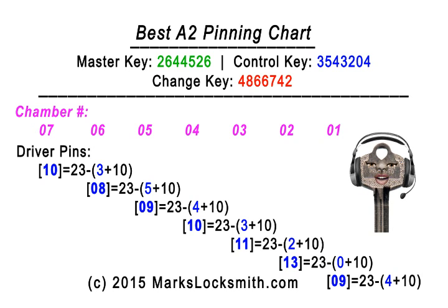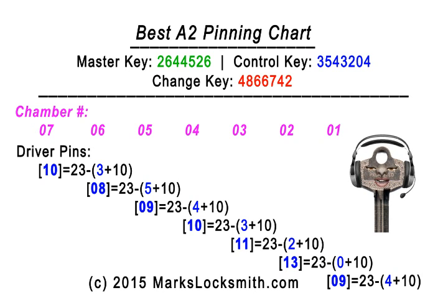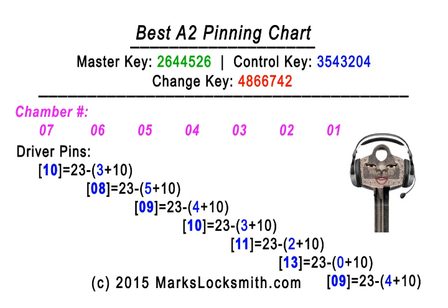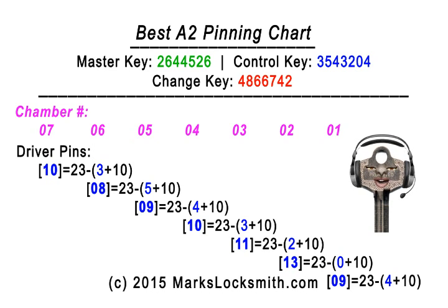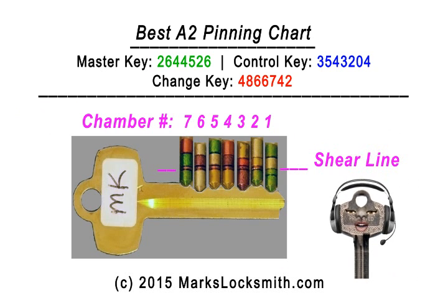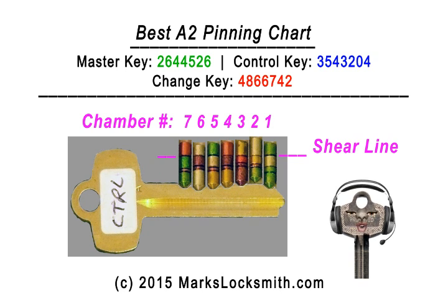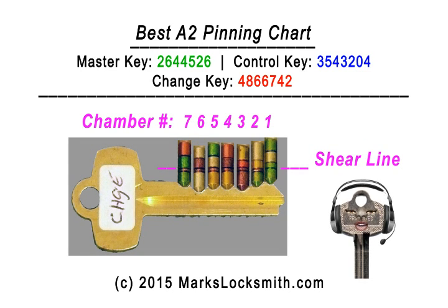Let's find our driver pins using the control key information. Chamber seven: twenty-three minus three from the control key plus ten equals ten. Chamber six: twenty-three minus five from the control key plus ten gives us eight. Chamber five: twenty-three minus four plus ten gives us nine. Chamber four: twenty-three minus three plus ten gives us ten. Same for chambers three, two, and one. Those are our driver pins. Here's what the master key looks like with the pins — notice the shear line. Here is the control key with the pins — notice the shear line. Here is the change key with the pins — notice the shear line.